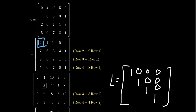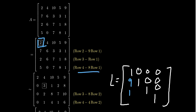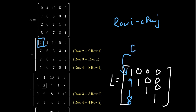This observation is critical for building L: we took row two minus nine times row one, so we put a nine in the two-one position of L — the opposite of the negative nine coefficient. Since we took row three minus row one, we put a positive one in the three-one position. And since we took row four minus eight times row one, we put a positive eight in the four-one position. If you always think of replacements as row I minus C times row J, you always put a positive C inside the matrix.